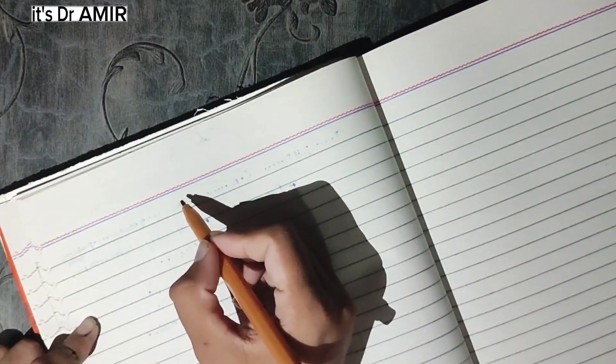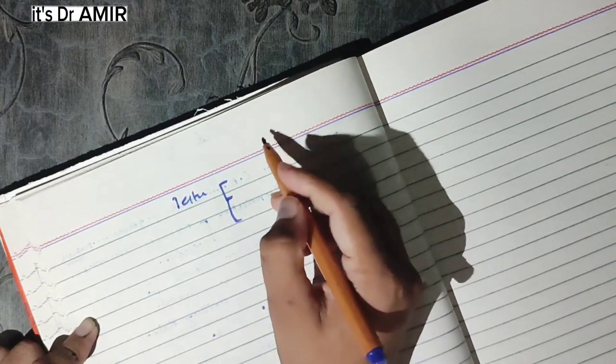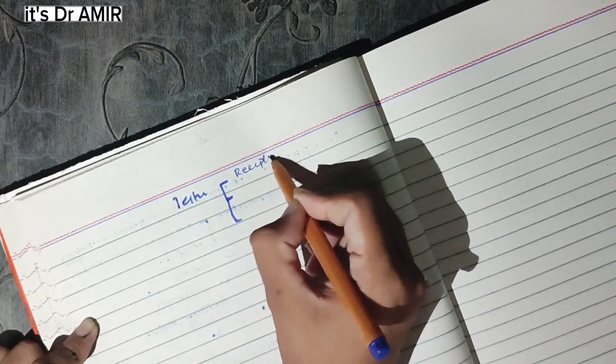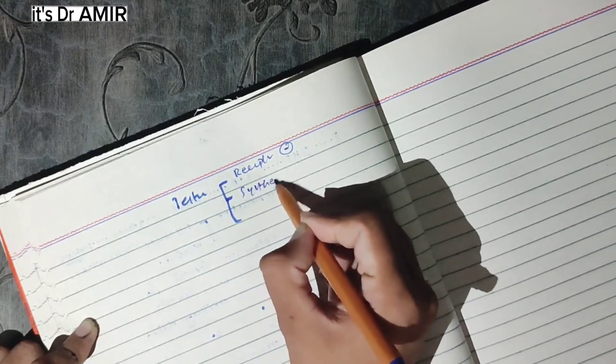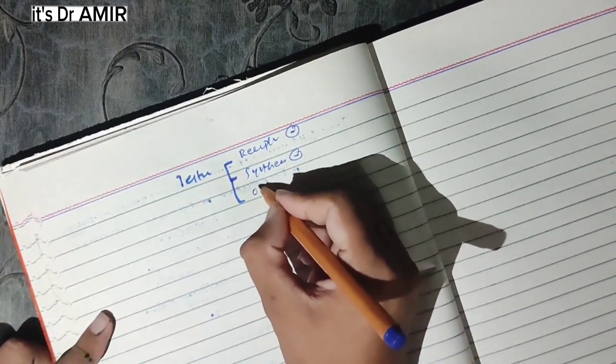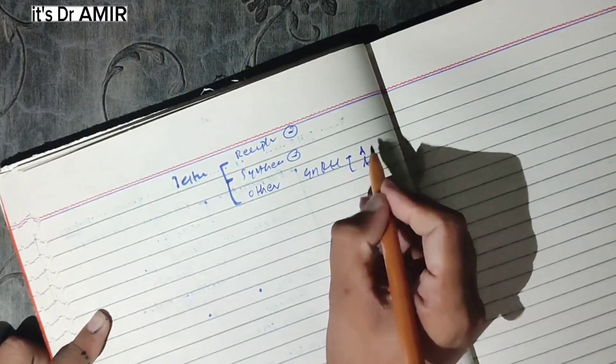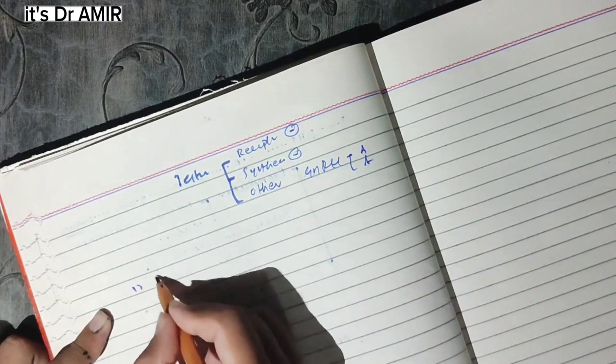Now we will talk about anti-androgen therapy. When we have to give antagonist form, we have to oppose the body's functions or testosterone levels. We can give anti-androgen therapy in three types. We can give receptor antagonist drugs, synthesis inhibitors, and GnRH agonist and antagonist can also be given to control testosterone secretion.